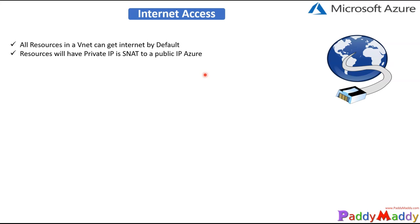And if you don't want that, you can actually create some kind of security policies from the network security group, or traffic routing can be done, or firewall-level filtering can be done.